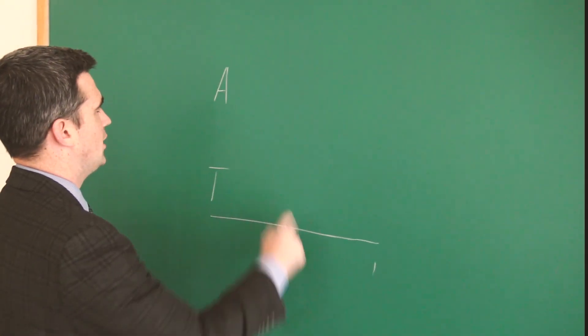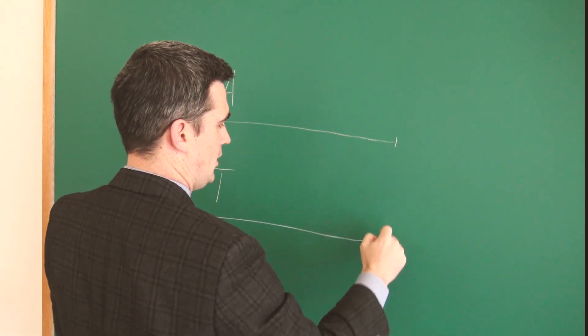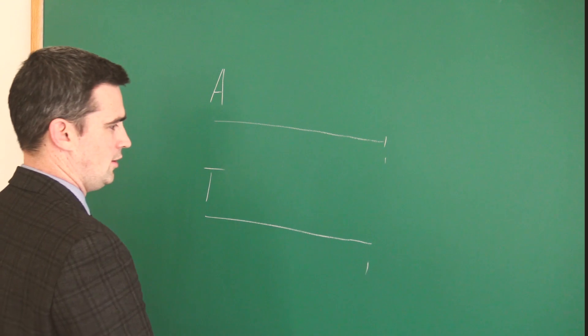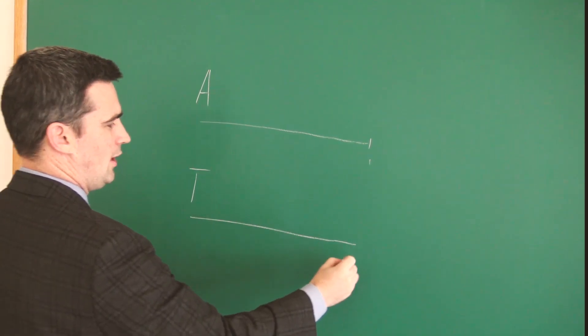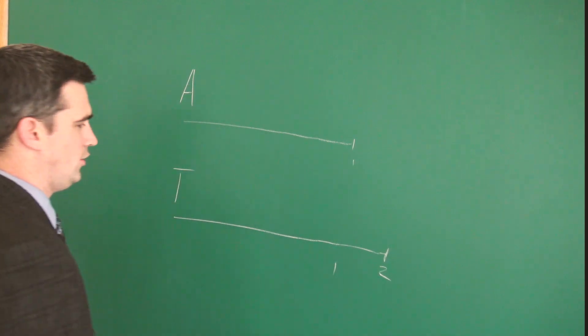So once the tortoise gets to here, we'll call it point sub one, Achilles starts going. And by the time Achilles gets to point one, the tortoise will have actually moved a little farther. Right? So he'll be here at point two.